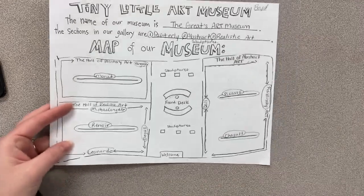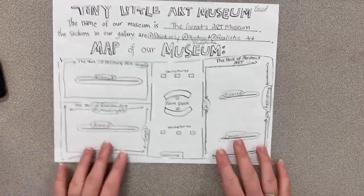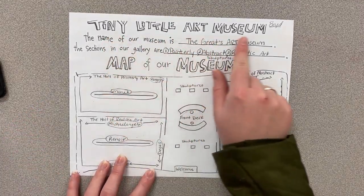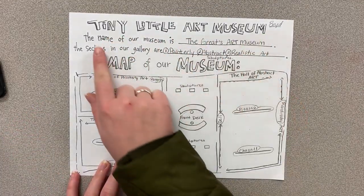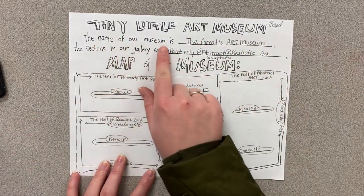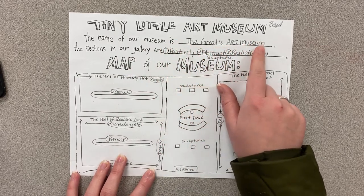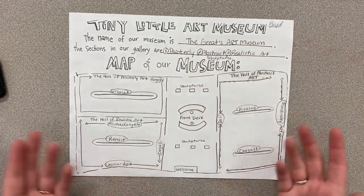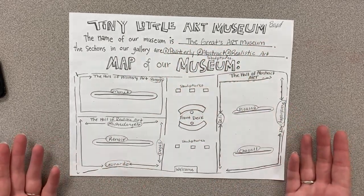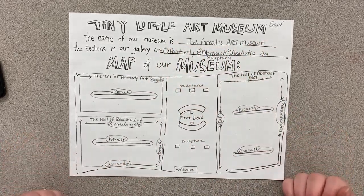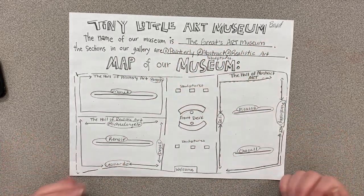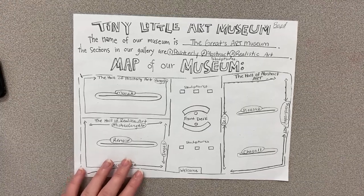This is an example of what I had made. So this is my tiny little art museum. The name of my museum is the Greats Art Museum — you can name yours whatever you want. The sections of my gallery are painterly, abstract, and realistic art.